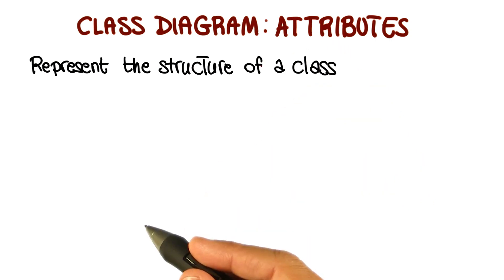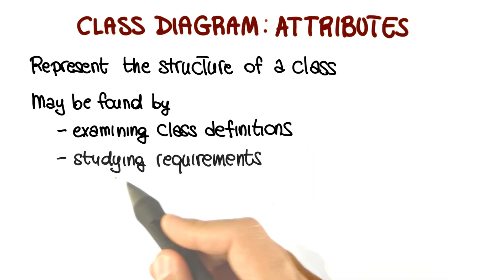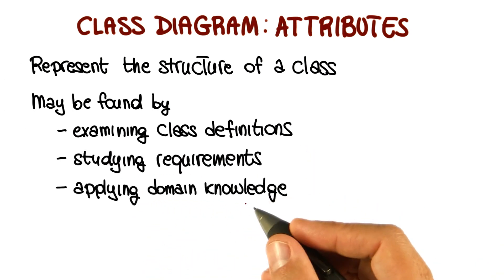So how do we identify these attributes? Attributes may be found in one of three ways: by examining class definitions, by studying the requirements, and by applying domain knowledge.